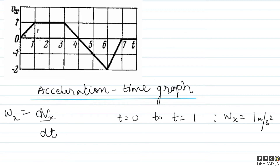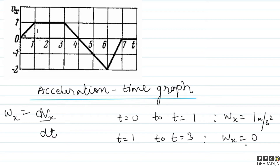Ab baat karte hain t equal to 1 se t equal to 3 tak ki. Is interval mein graph ka slope 0 hai, kyunki velocity constant hai, toh wx = 0 hai is interval mein.